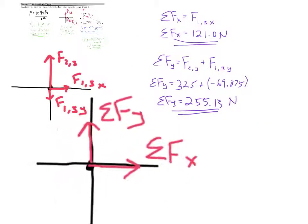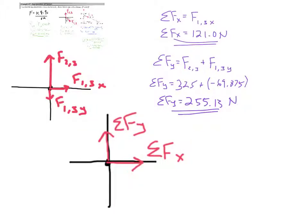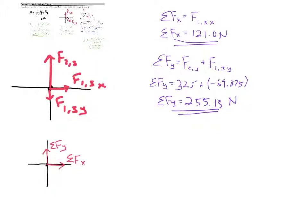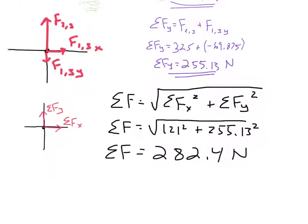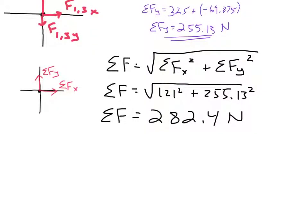The net forces on this charge are 121 newtons in the x-direction and 255.13 newtons in the y-direction. Using the Pythagorean theorem — pythagorizing them — we get a resultant of 282.4 newtons. Using the inverse tangent function, this is at an angle of 65 degrees above the x-axis.